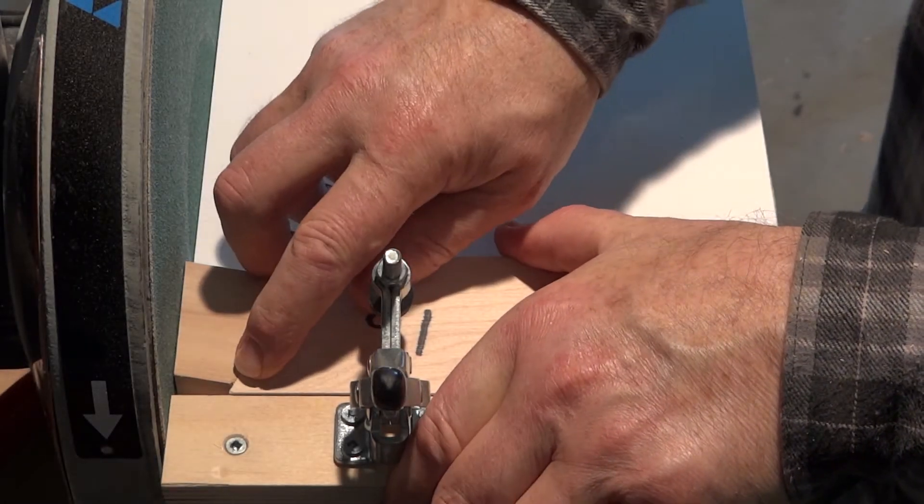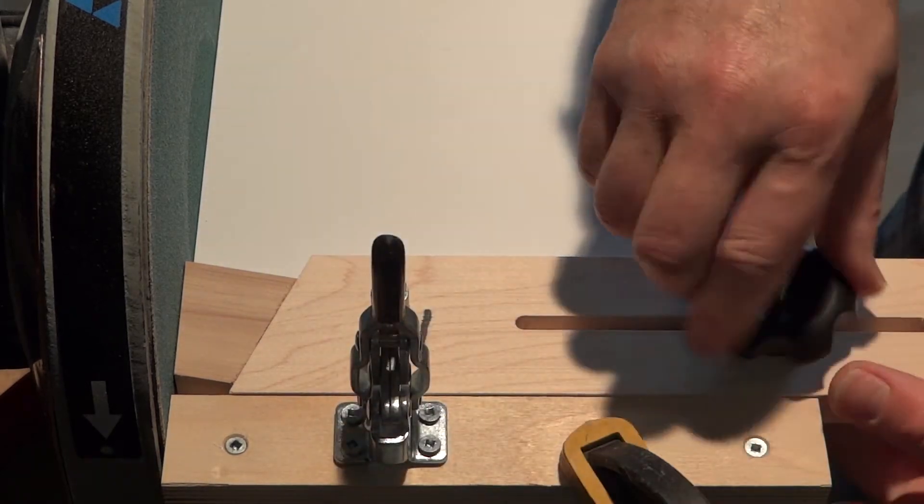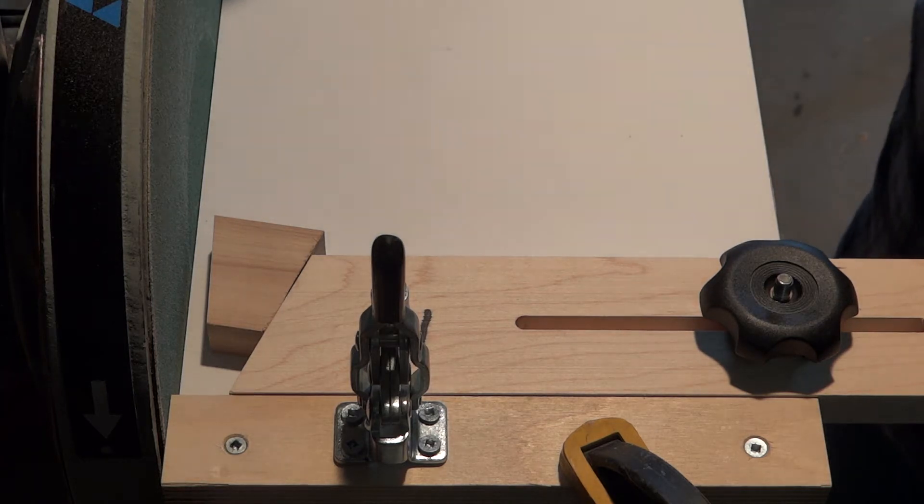So I'll move it up so I've got a little bit of a gap there, just enough so that I can sand both sides. I'll turn on the dust collector, the sander, and do both sides.